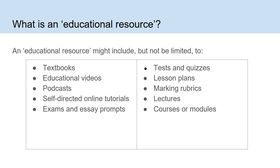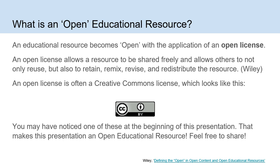So all kinds of things could be an educational resource. How do we turn that into an open educational resource? The answer is to apply an open license. An open license allows a resource to be shared freely and allows others to not only reuse but also retain, remix, revise, and redistribute the resource. That's a definition from Wiley — we'll hear from him once or twice again.